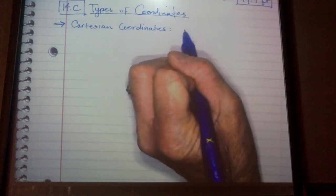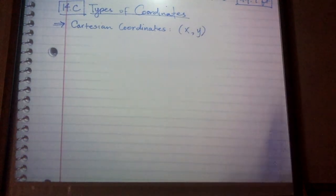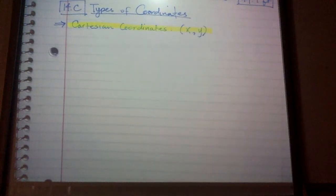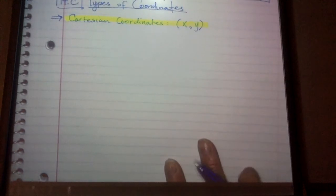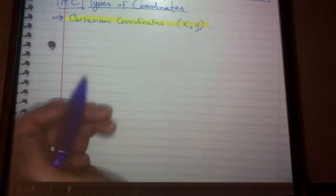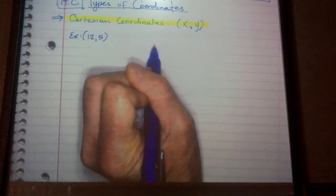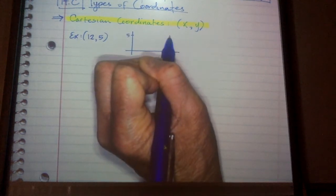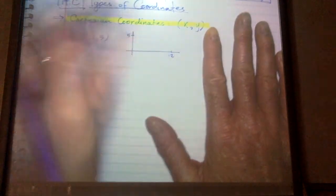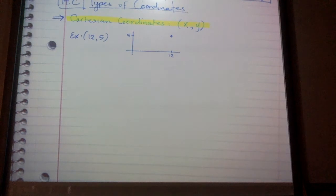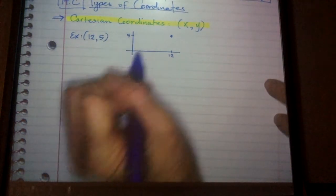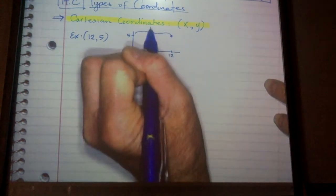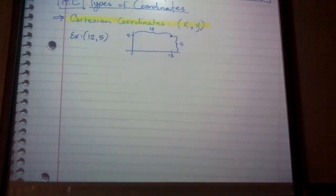Let's go over Cartesian coordinates. They are X, Y — that is how we write Cartesian coordinates, and they're on an X and Y axis. You've seen this before. This measures how far across and how far up and down a point is. For example, (12, 5): I would go over 12 and up 5, and so my point would be here. This distance here is 12, and the distance up is 5. So that is review.